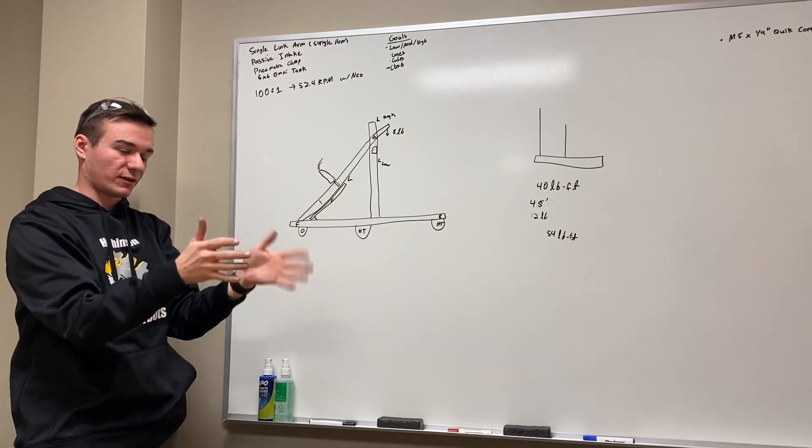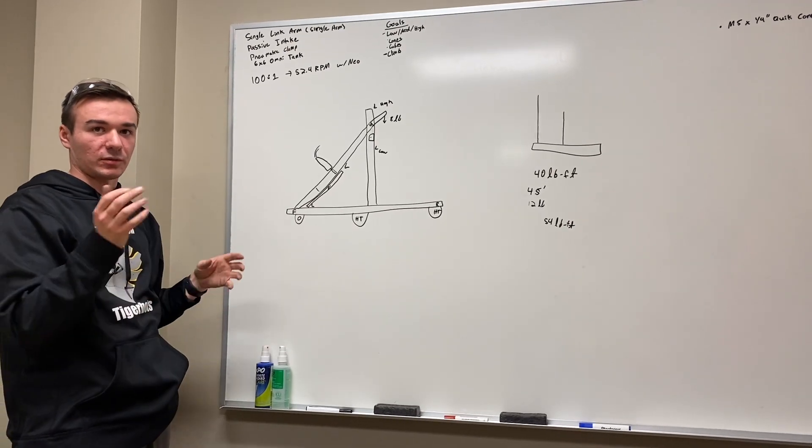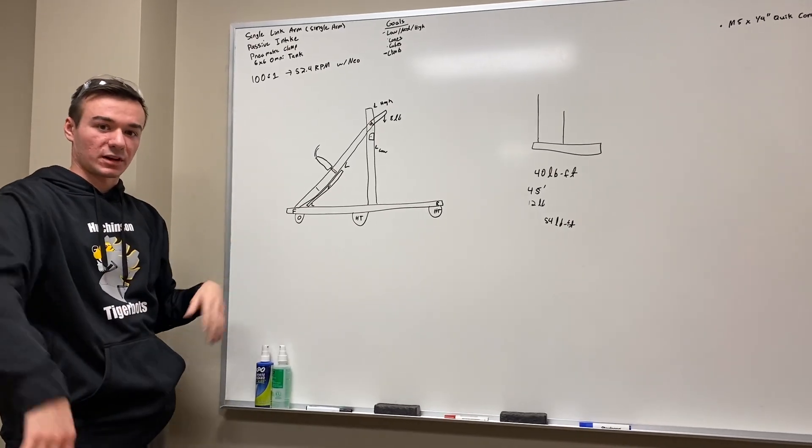with the cone only being about five inches wide, the cube being about nine, it's just going to be easier with the additional width capabilities that we're going to have with the pneumatic clamp.